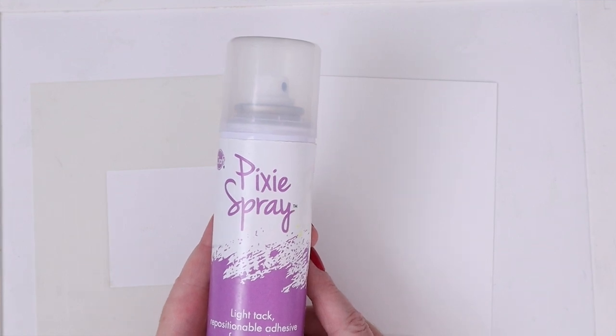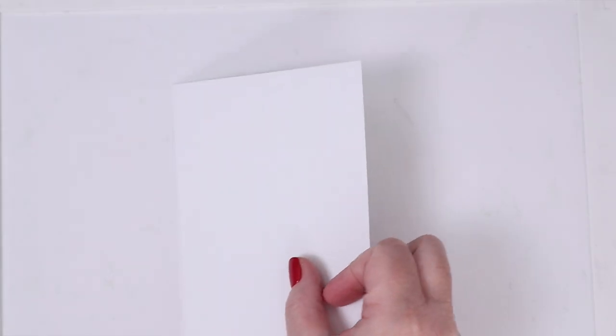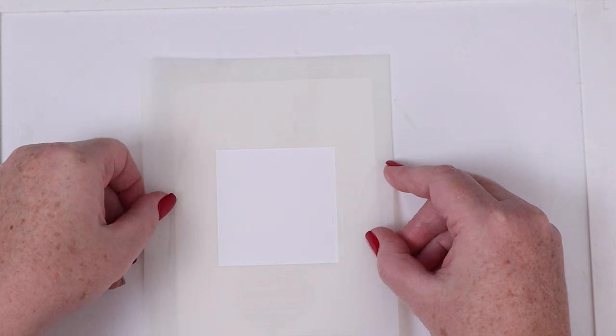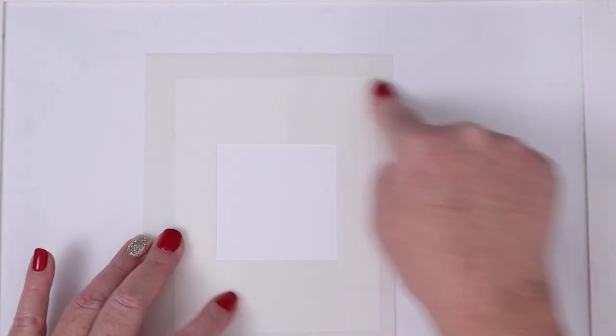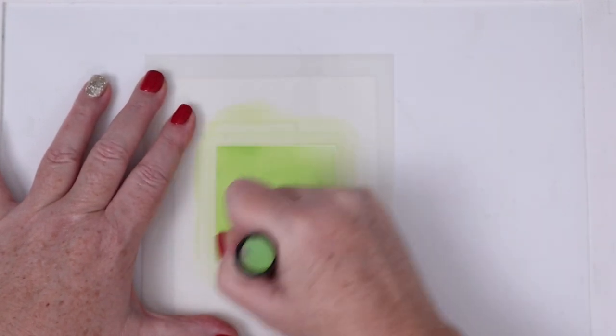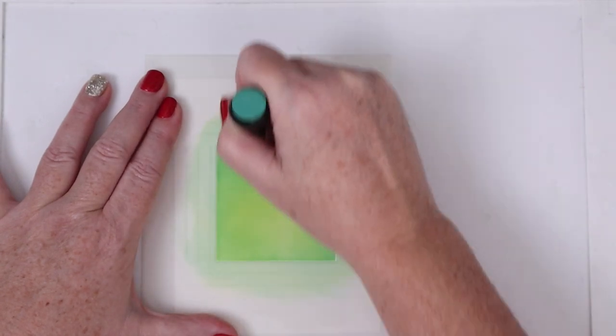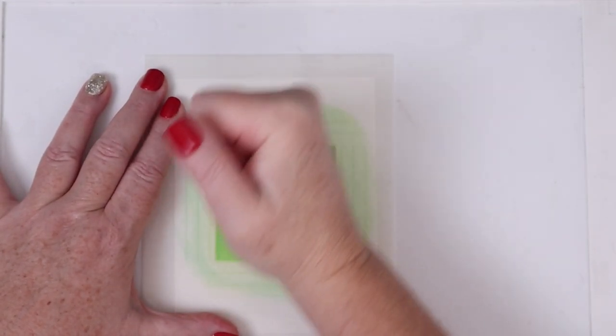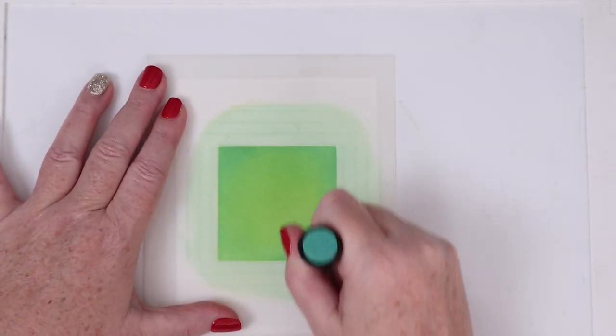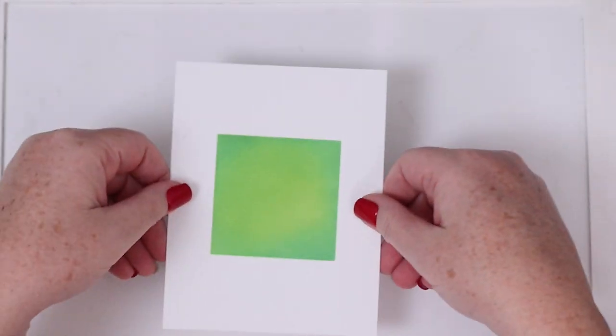So I start out by spraying the back of the Spotlight Square stencil with Pixie Spray, then I lay an A2 cardstock white panel on the overspray and lay the stencil on top using the guidelines to center the square. Next I'm going to ink blend with Distress Oxide Mowed Lawn and add in a little bit of Pine Needles as well to get a really pretty blend between the two colors. And I love how crisp this looks when you peel off the stencil.